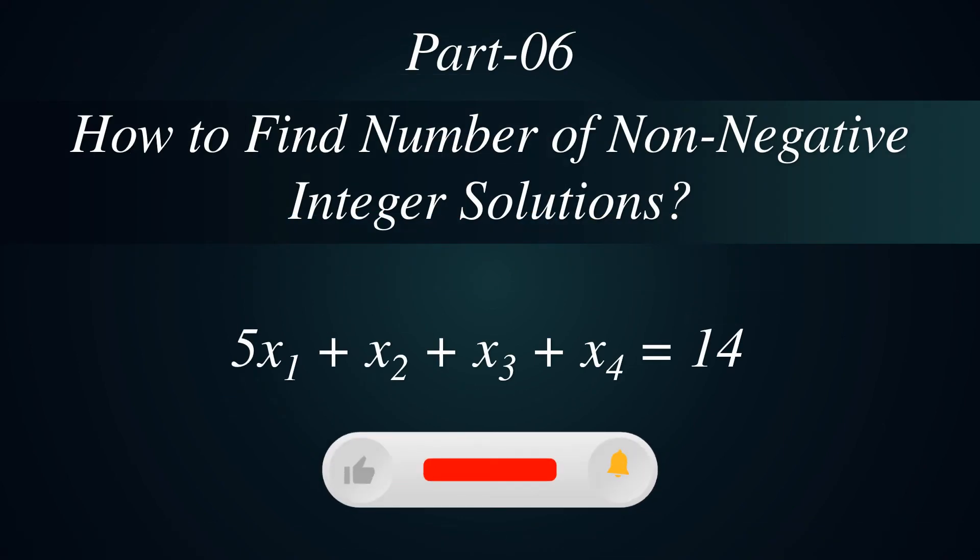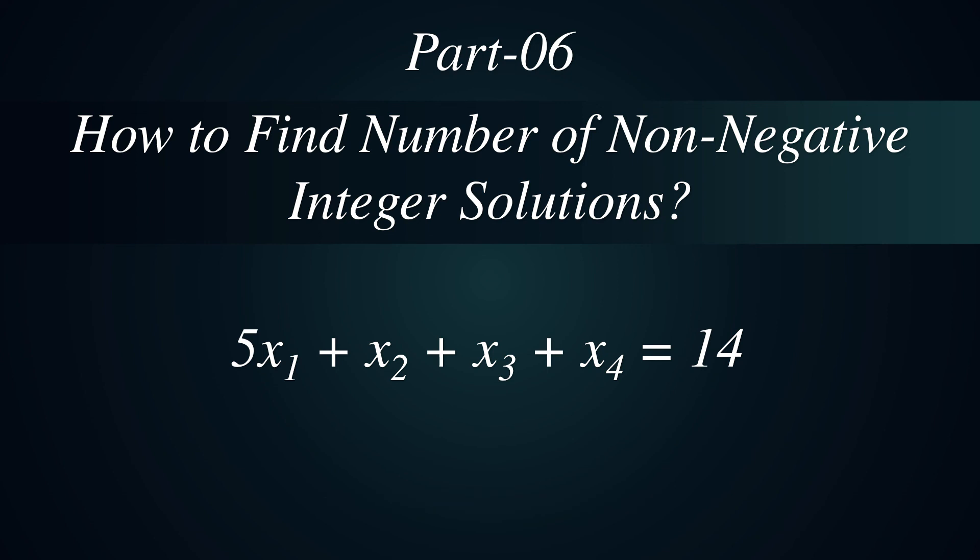In the next part of the lecture series, we will learn how to find the number of non-negative integer solutions of linear equation 5x1 plus x2 plus x3 plus x4 is equal to 14, where the coefficient is not unity.